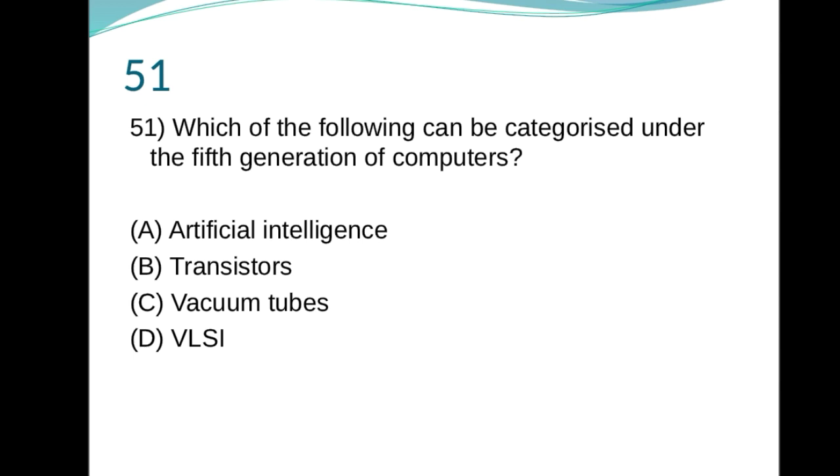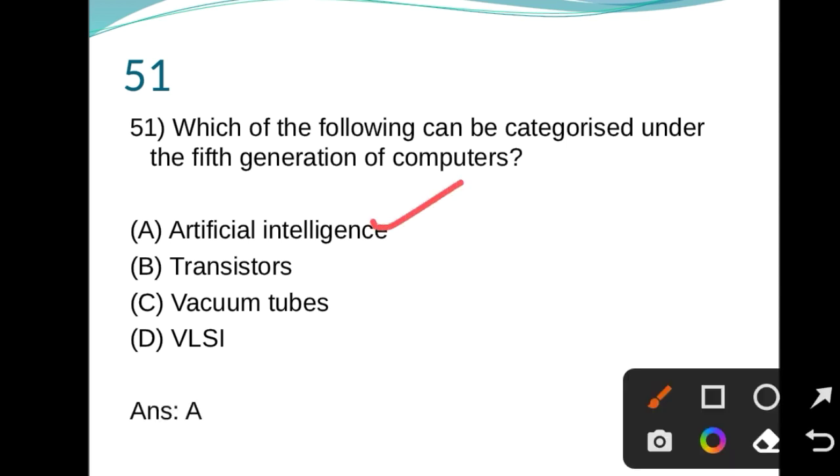51st question. Which of the following can be categorized under the fifth generation of computers? Artificial intelligence, transistors, vacuum tubes, VLSI. This is first one, right answer. Artificial intelligence, A is the right answer.